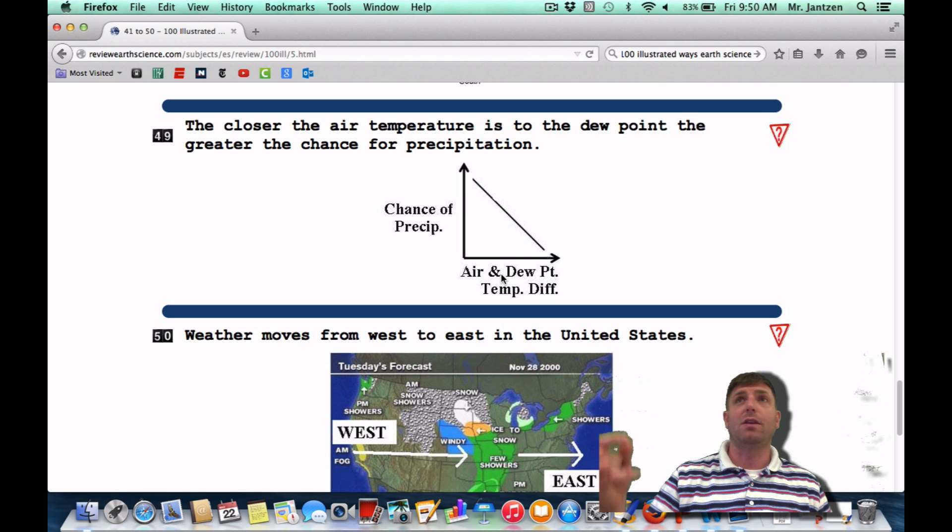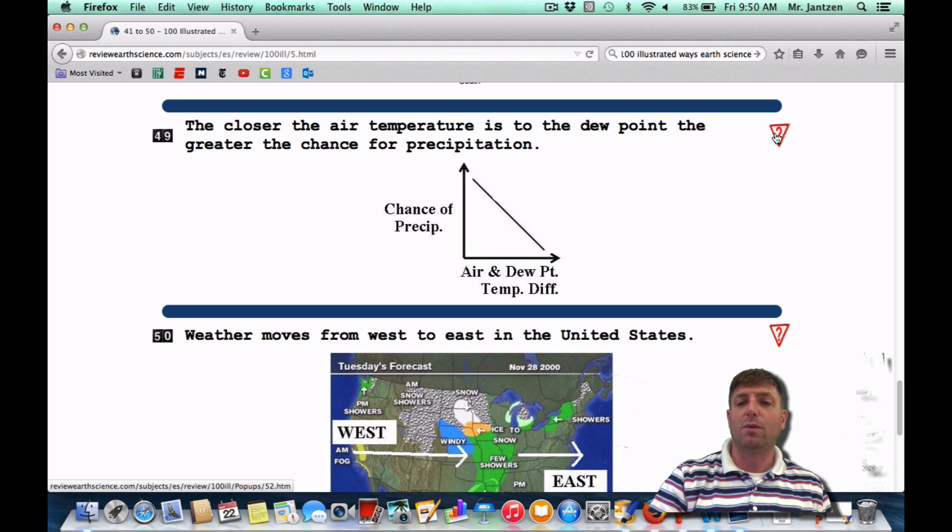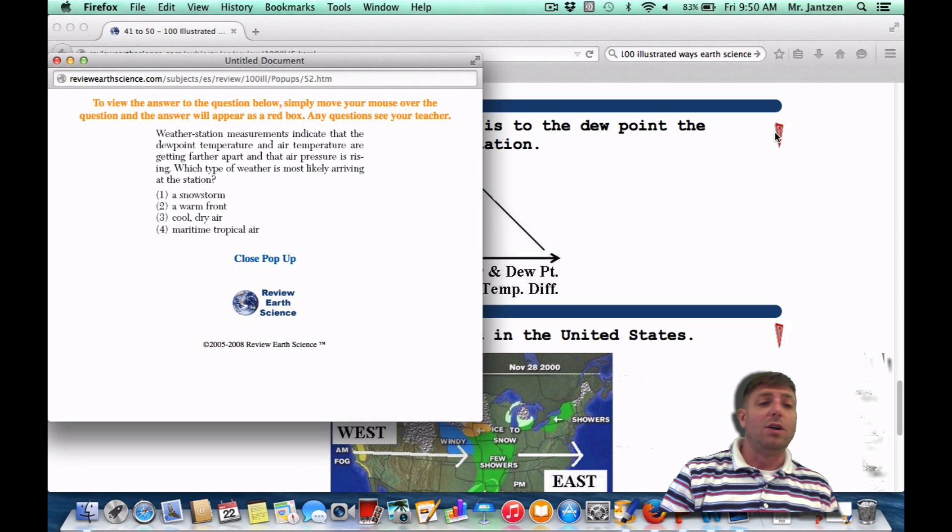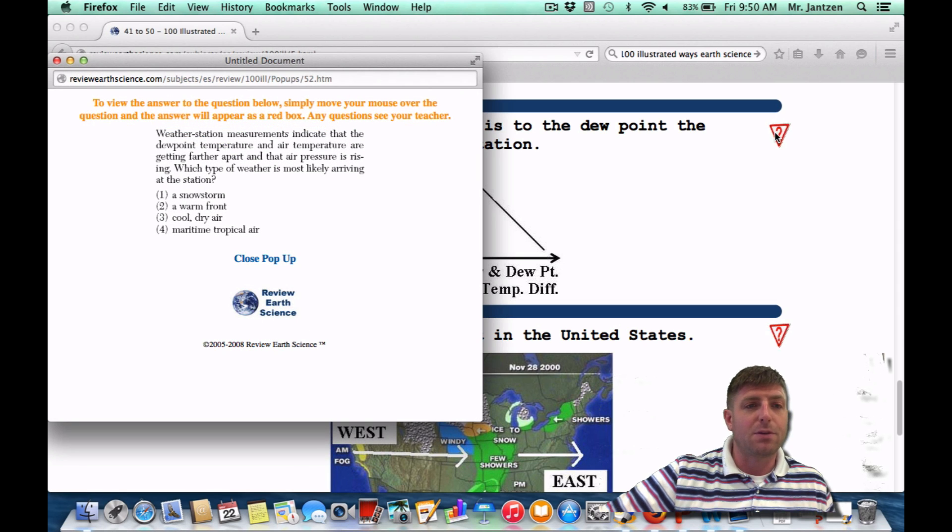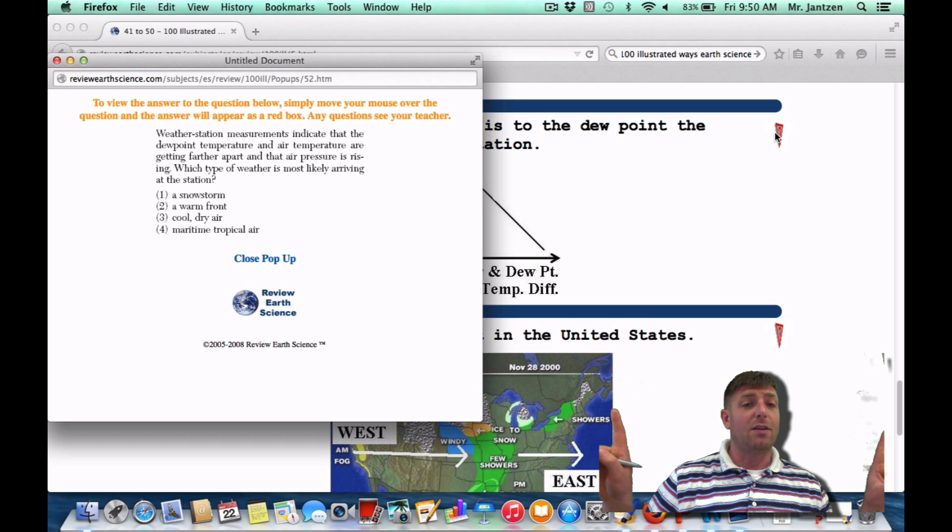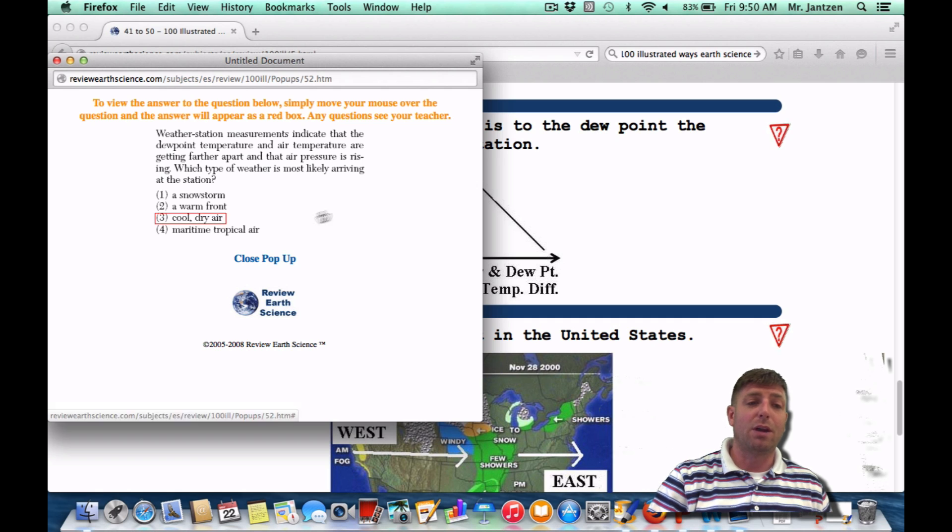What we want you to understand is when that dew point and temperature get closer together, you have a greater chance of precipitation. Sometimes in the question, they'll show you a station model with the temperature and the dew point, and they want to know which station model has the greatest chance of precipitation. So you'll pick the one with the ones close together. You'll see another question: Weather station measurements indicate that the dew point temperature and air temperature are getting further apart and that the pressure is rising. Which type of weather is most likely arriving? Rising pressure, that's high pressure. That's happy weather. So we're talking about that cool, dry air or choice three.